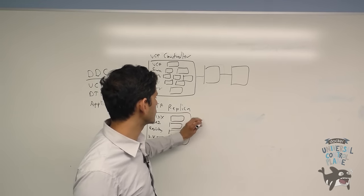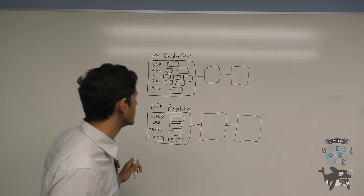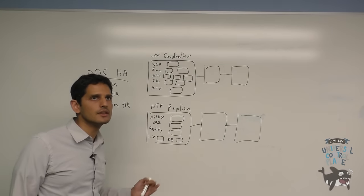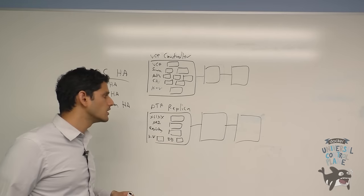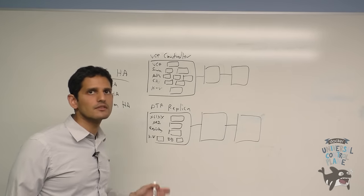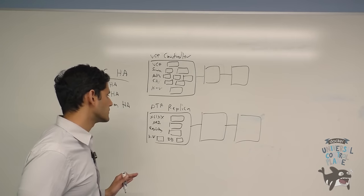DTR replicas can be, as you might expect, replicated across a series of different nodes, similar to UCP in 3, 5, or 7. So in the same thing, if you have three DTR replicas, you can tolerate one failure, five replicas, you can tolerate two failures, seven replicas, you can tolerate three failures.